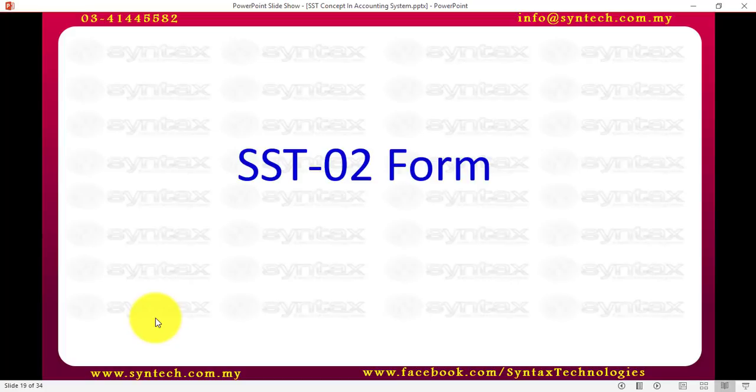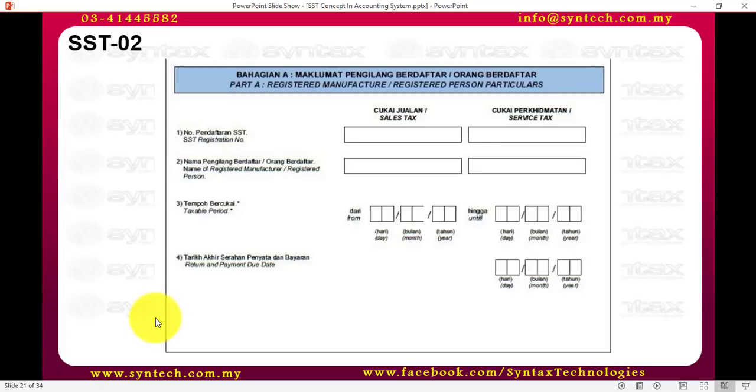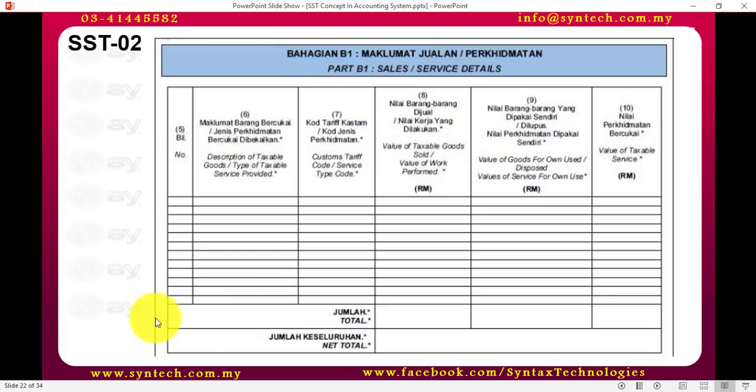The whole idea is for us to fill up the SST02 form. When you go to this form, you can see all the fields and compare with the GST03 form. Personally, I think this form is very, very difficult to fill if you are not using an accounting system. So to me, even though there's no rule saying it's compulsory to use an accounting system, it is compulsory in my personal opinion, because I don't see any way for you to do SST manually. It's just too complicated.